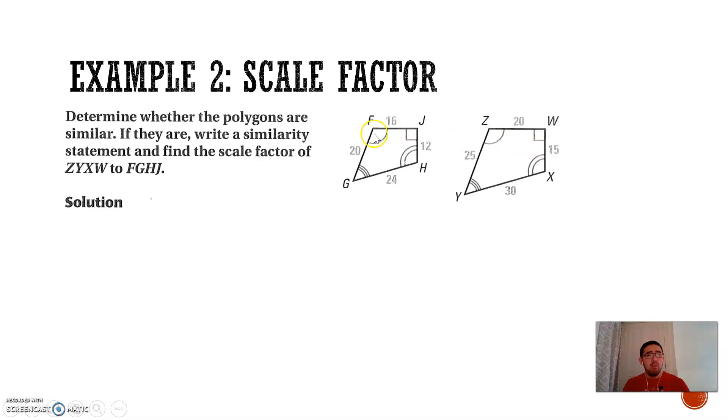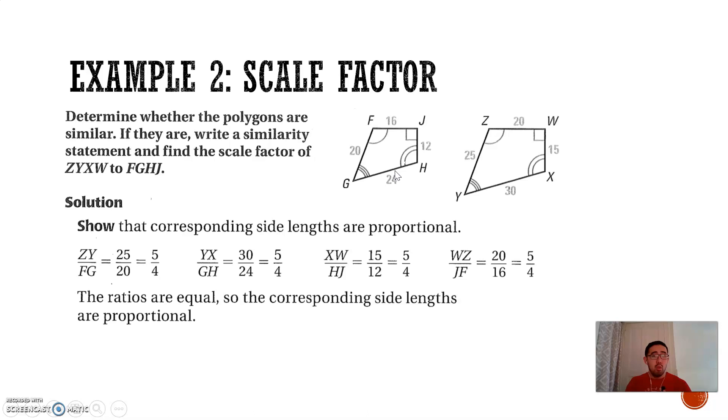Let's look at what the scale factor is. If we take ZY over FG, I get 25 over 20, which simplifies to 5 over 4. That's the scale factor right there. You want to check the other ones, like 30 over 24, to make sure they're all 5 over 4. All of the corresponding side lengths should have the same proportion, and that proportion is the scale factor of the two polygons.